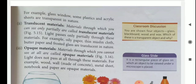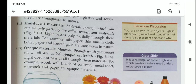Materials through which we cannot see at all are called opaque materials — light does not pass through them at all. For example, wood, wall, metal sheet, notebook, and paper are opaque materials. To summarize: in transparent materials, light passes fully; in translucent materials, light passes partially; and in opaque materials, light does not pass.